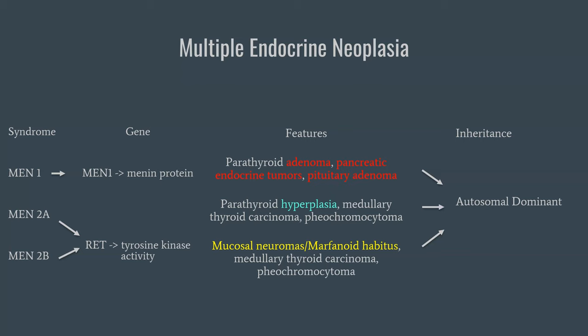MEN2B has the same RET mutation, the same medullary thyroid cancer, and the same pheochromocytoma, but differs in that you have mucosal neuromas — lesions within the skin — and marfanoid habitus, which includes long extremities and hyperextensible skin and joints. All the distinguishing features are highlighted across these three syndromes. If you keep those highlighted portions straight, you will almost never miss any of these questions.